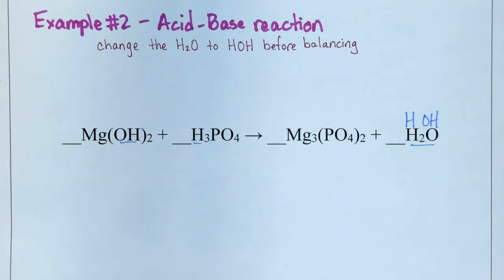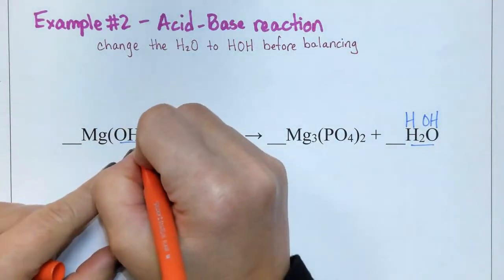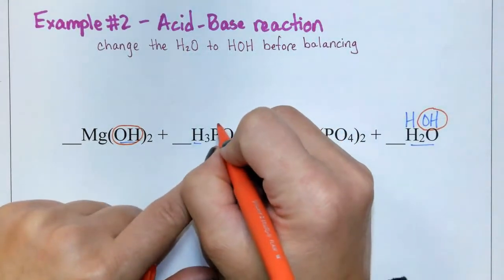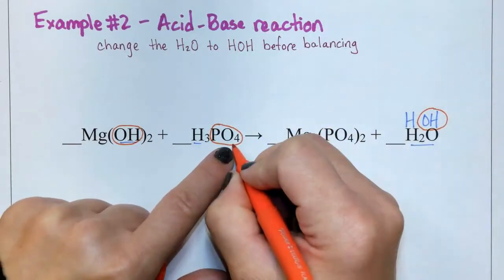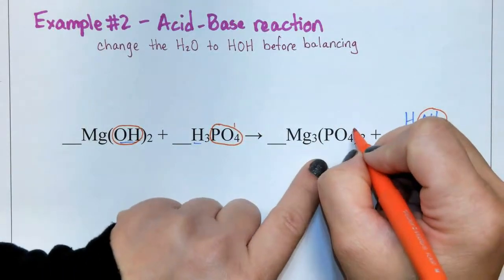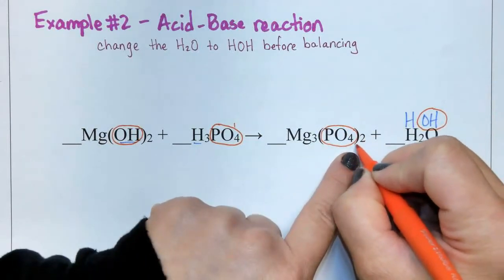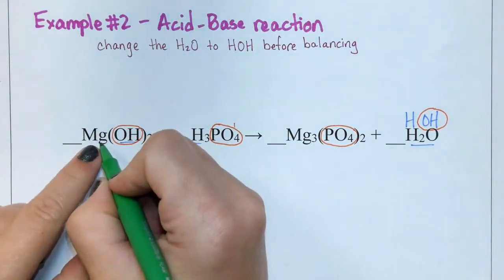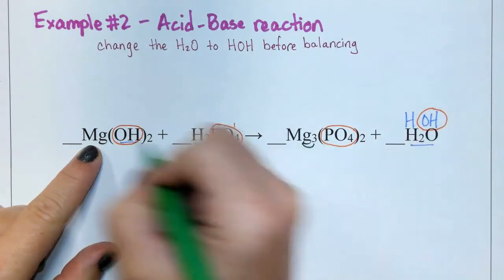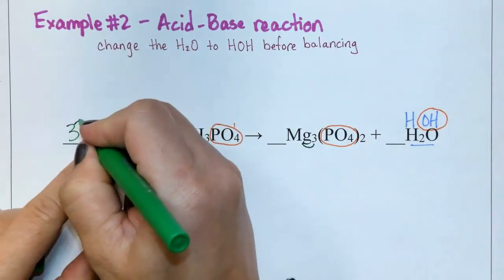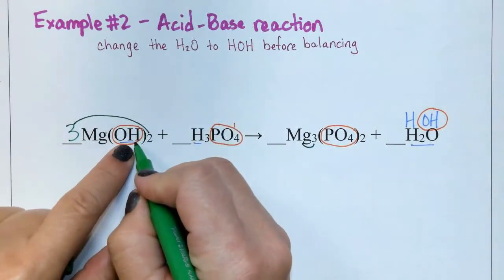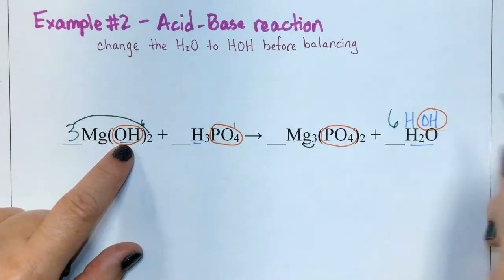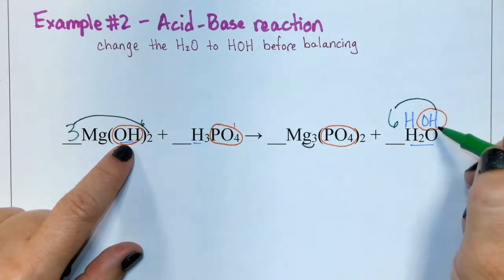Now let's note our polyatomic ions. On the left we have hydroxide, and on the right we have hydroxide. On the left we have PO4, which is phosphate, and there's only one phosphate here. On the right, we have phosphate, and there's a subscript of two next to that phosphate. Now let's balance the coefficients. We have one magnesium on the left and three magnesiums on the right, so we need a three here. This gives three times two is six hydroxides on the left-hand side, and a coefficient of six makes six hydroxides on the right.